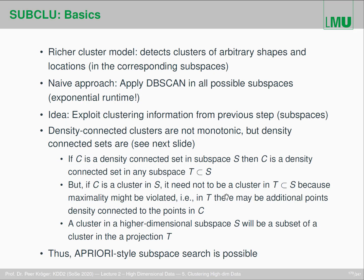It's a richer cluster model that handles clusters of arbitrary shape and is not sensitive to the location and resolution of the grid. For subspace clustering, the naive approach would be to apply DBSCAN on all possible subspaces, but that gives us exponential runtime — O(2^d) for a d-dimensional feature space. A better idea is to exploit clustering information from the previous step using a subspace search.